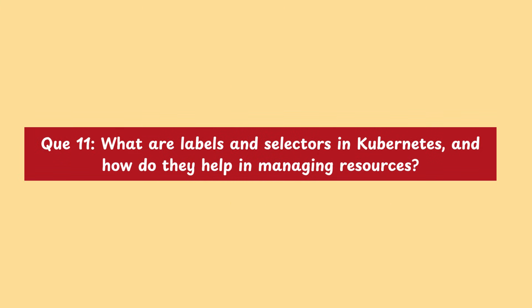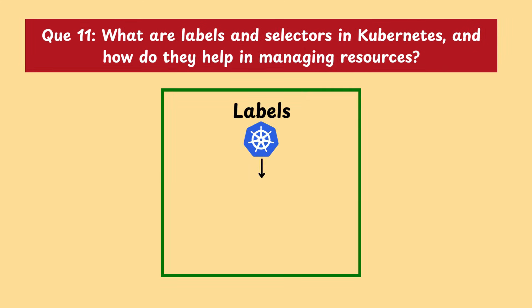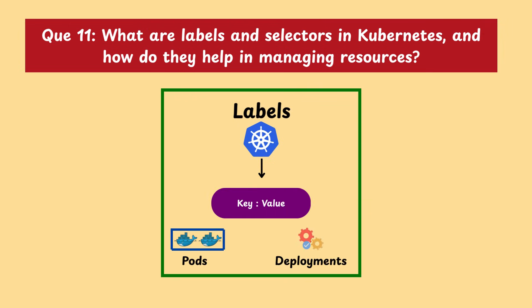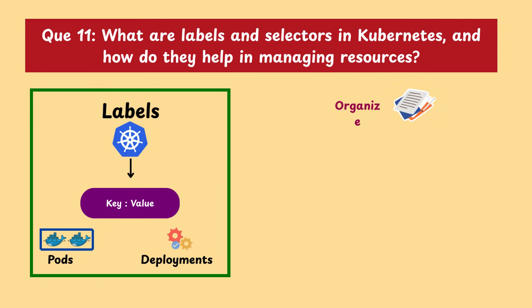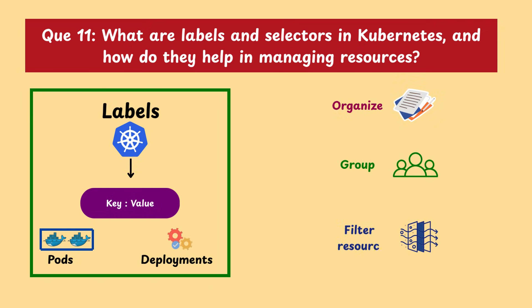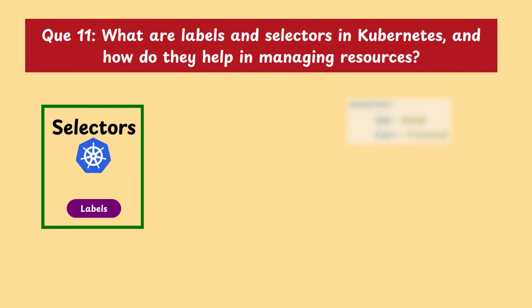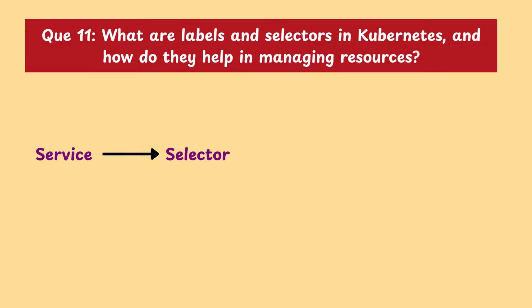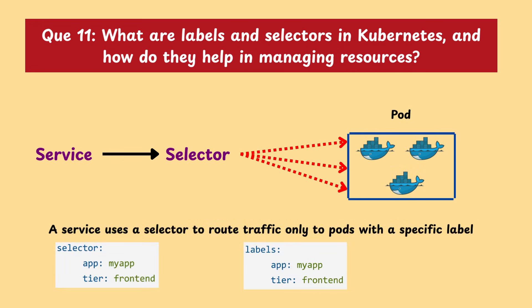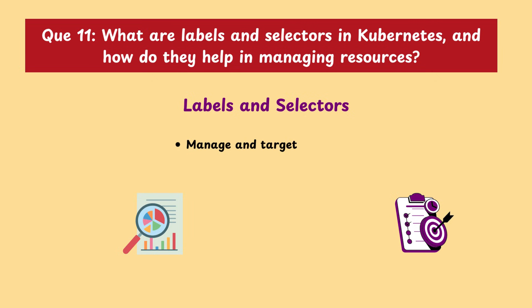Moving on with our next question: what are labels and selectors in Kubernetes and how do they help in managing resources? Labels in Kubernetes are key-value pairs attached to objects like pods and deployments. They help organize, group, and filter resources. Selectors are used to query or match these labels. For example, a service uses a selector to route traffic only to pods with a specific label. Together, labels and selectors make it easy to manage and target specific sets of resources in a large cluster.